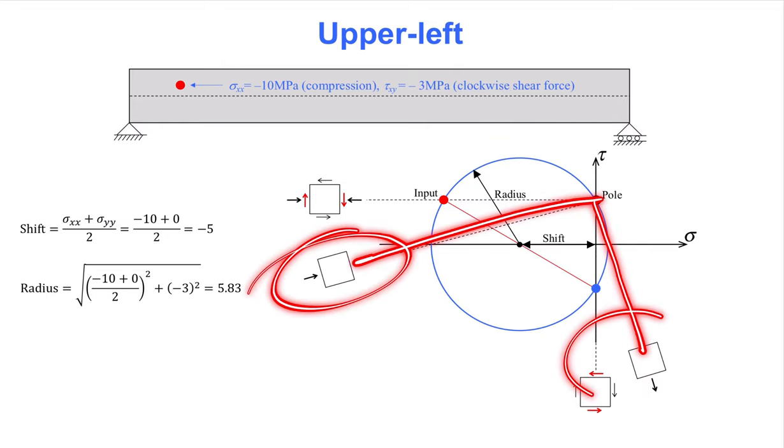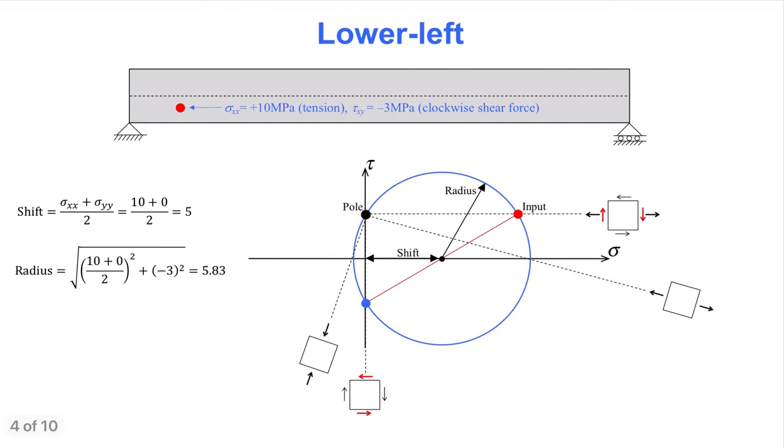On the next slide, a point in the lower left side of the beam is studied. Now, the shift of the circle is positive, so most of the circle appears in the region of positive axial stress, sigma. That makes sense, because the axial stress is indeed in tension at this point, which is considered positive for axial stress.